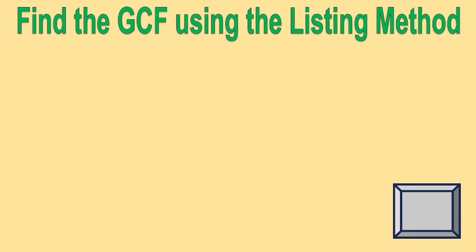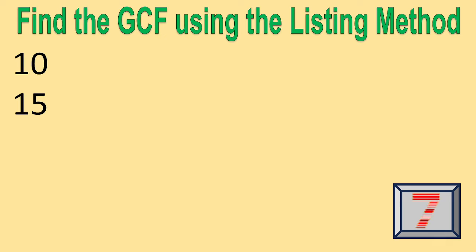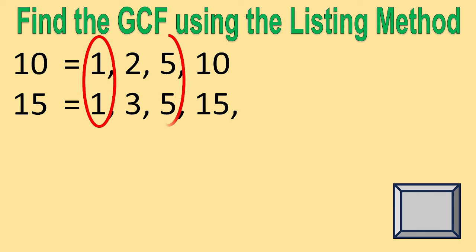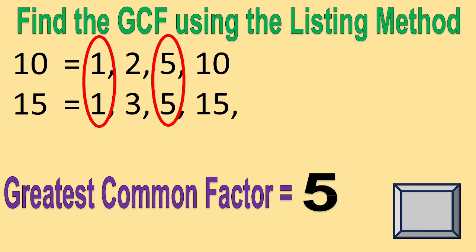Quiz time! Let's answer this. You only have 10 seconds to answer. Find the greatest common factor using the listing method. First problem: 10 and 15. The greatest common factor is 5.